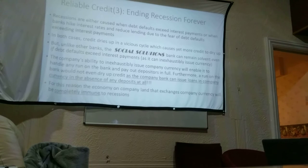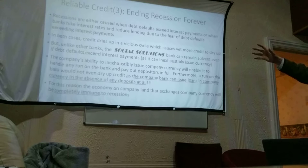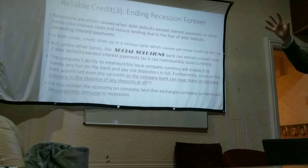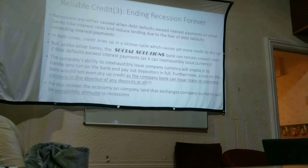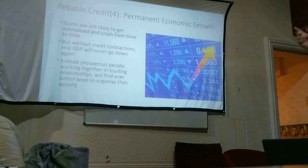So this system can react a lot quicker as well? Yes, I think it's much more robust. Broadly speaking, that's kind of what happened — we do need central banks to do exactly that. But with the existing central bank and private bank deposit system, it's a much more lumbering system than what I'm proposing here. Permanent economic growth: stocks are still likely to get overvalued and crash from time to time, but without credit contractions, real GDP will never go down again.